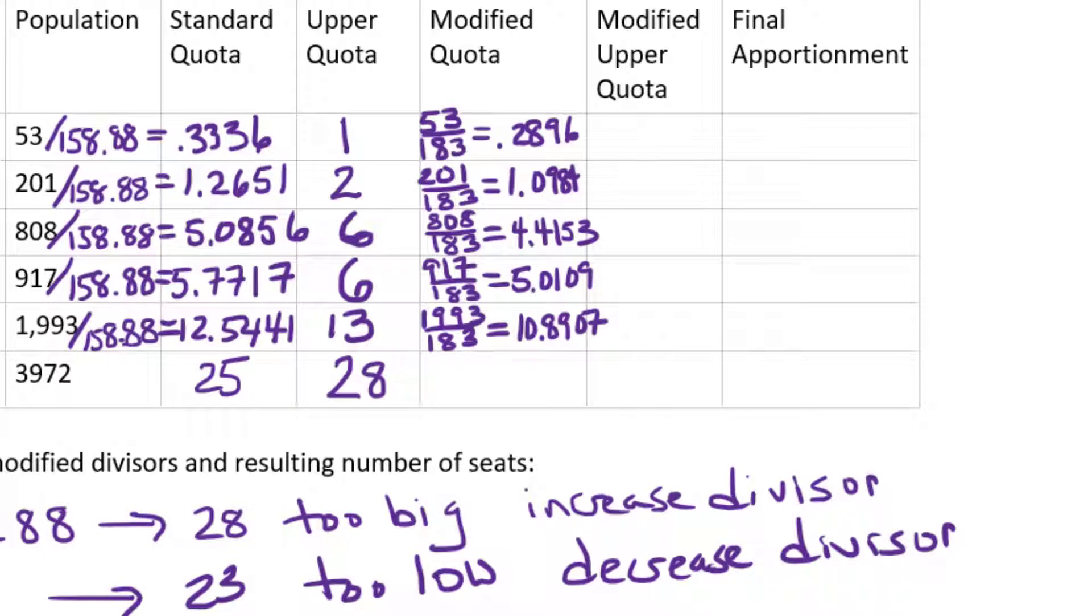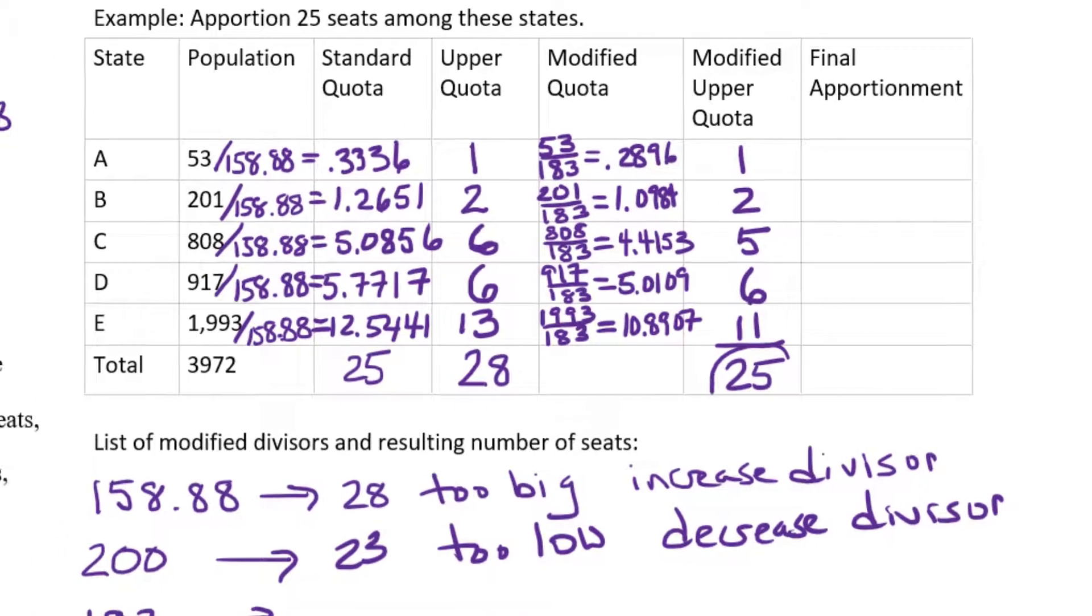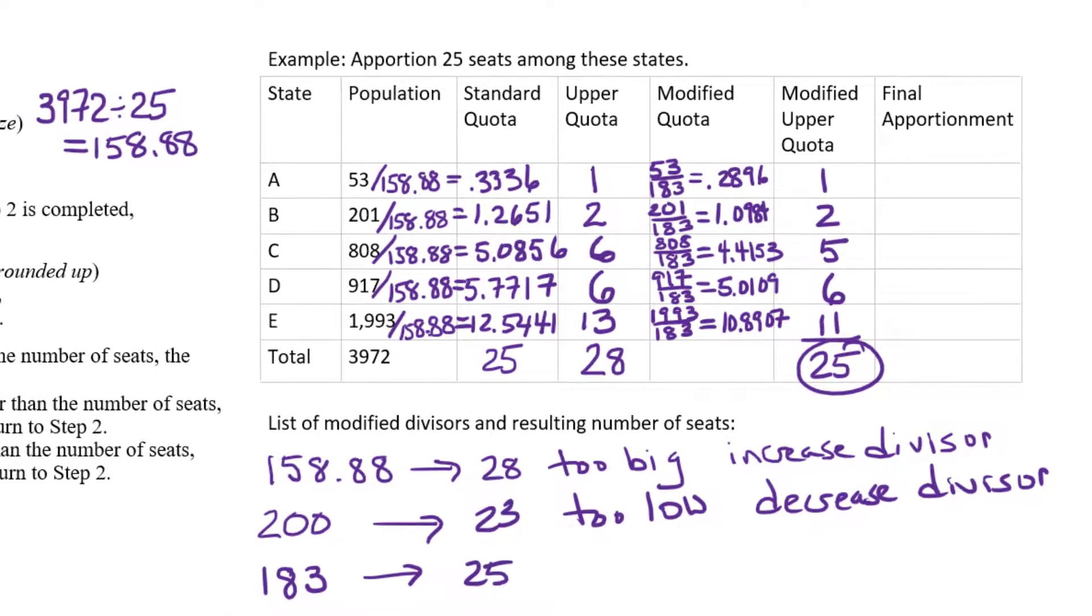So I've completed step two again. And now back to step three, we're going to list the upper quotas. So we have 1, 2, 5, 6, and 11 are the whole numbers that are just bigger than these decimal numbers. We're going to add up, these are now the modified upper quotas. We also in step three have to find their sum. So we're going to add up 1 and 2 is 3 and 5 is 8 and 6 is 14 and 11 is, guess what? 25. So 25 which is just right.